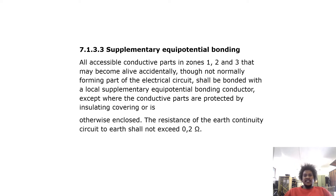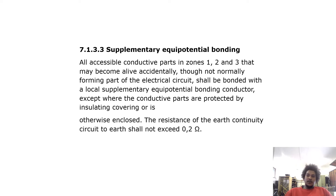All accessible conductive parts in zones 1, 2 and 3 that may become live accidentally — though not normally forming part of the electrical circuit — shall be bonded with a local supplementary equipotential bonding conductor, except where the conductive parts are protected by insulating covering or are otherwise enclosed. The resistance of the earth continuity circuit to earth shall not exceed 0.2 ohms.